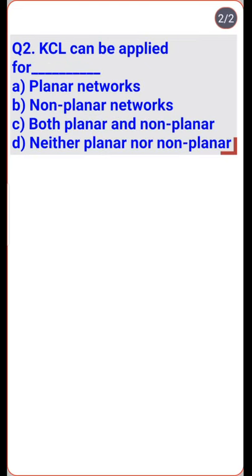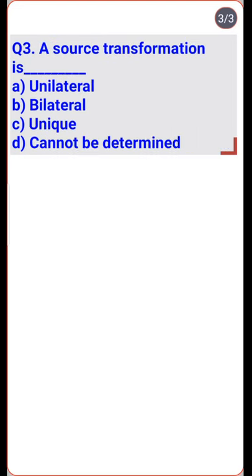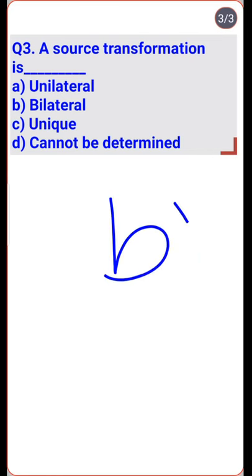KCL is applied for different nodes of a network. Source transformation is bilateral because a voltage source can be converted to a current source and vice versa — so option B is the right one.